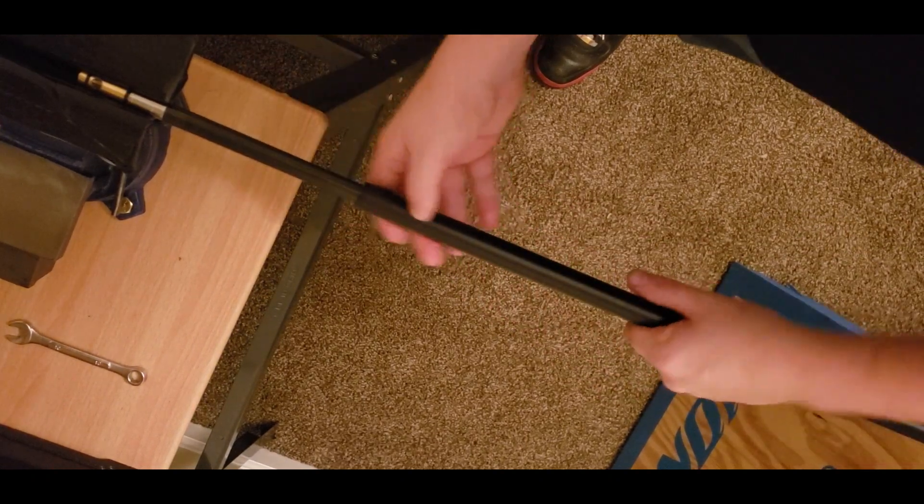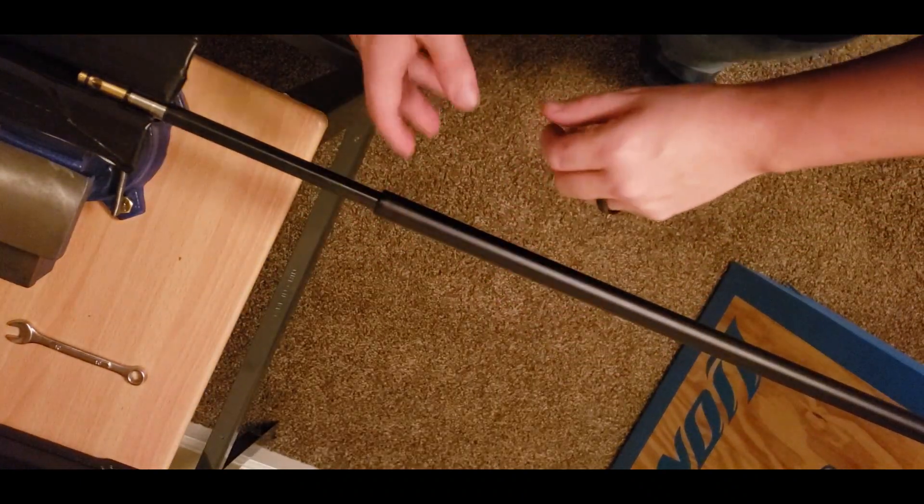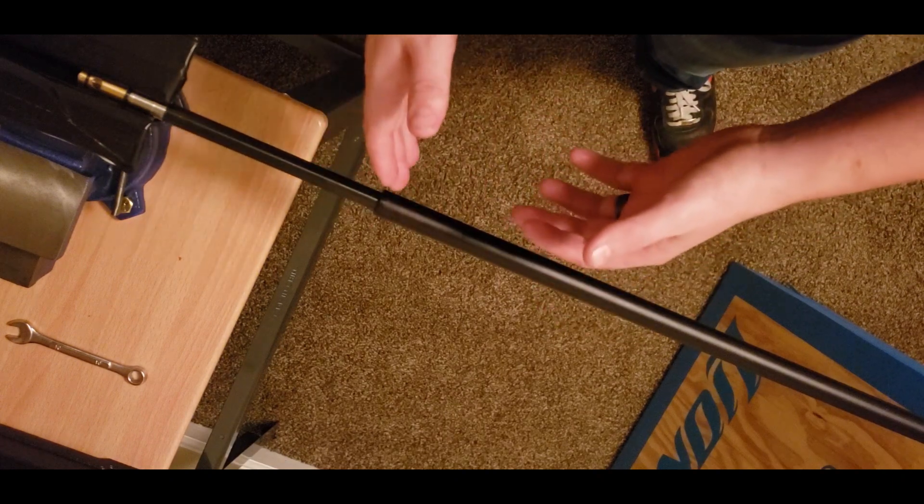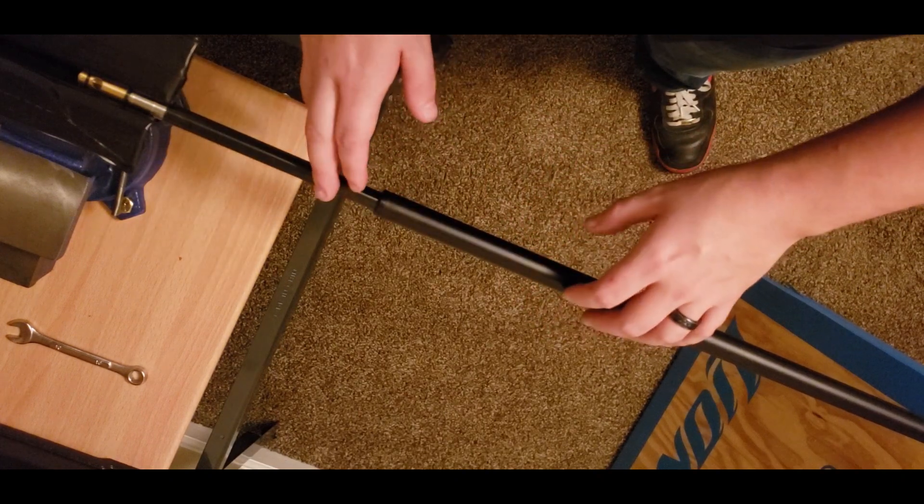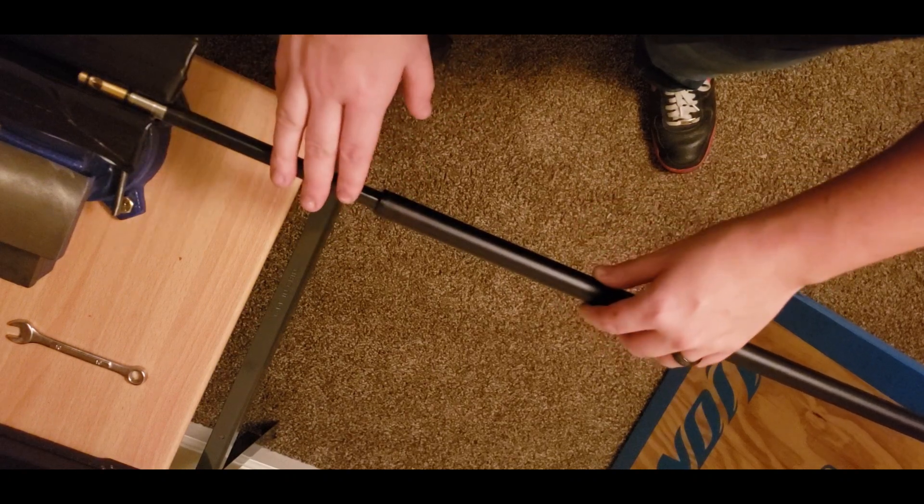It just twists off in a counterclockwise motion. And there you go, it'll slide right on off. This is a Dreamline barrel, it's a smaller shroud than normal, works the same way for the impact shroud and actually the Wildcat shroud comes off the same way.